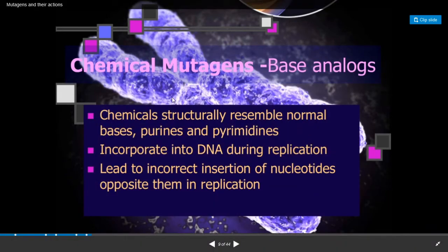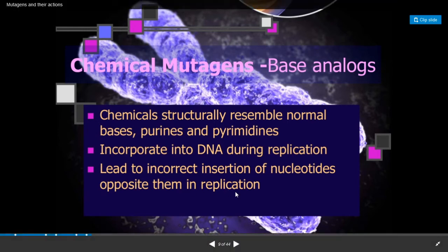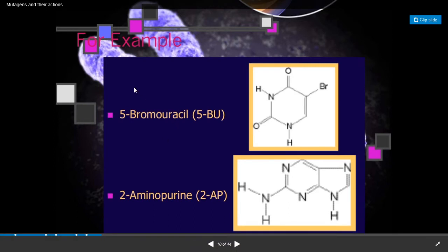The first chemical mutagenic agents are base analogues. These are chemicals that are structurally similar to normal bases, that is purines and pyrimidines. They incorporate into the DNA molecule during DNA replication and lead to the incorrect insertion of a nucleotide opposite them in the replication process, changing the sequence of the daughter DNA molecule — that is mutation.